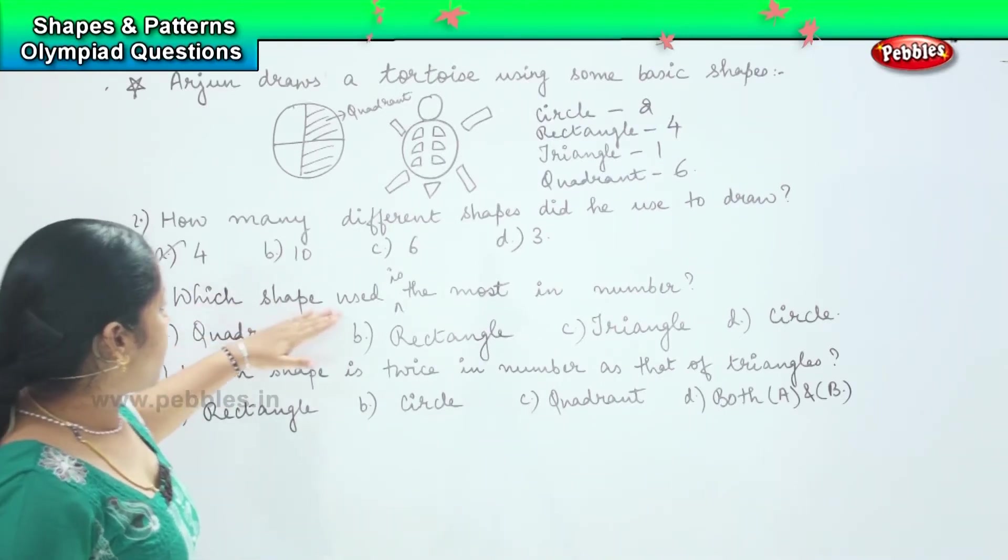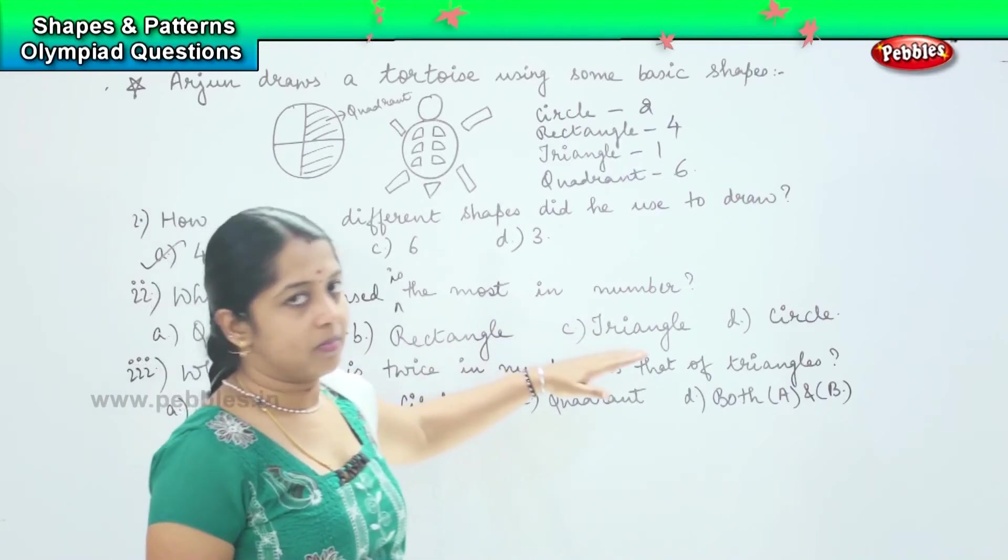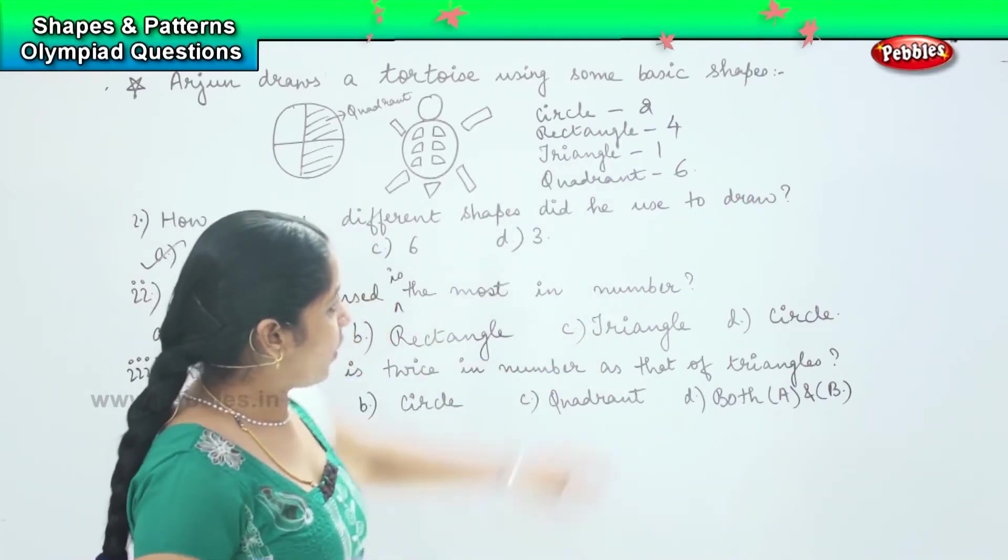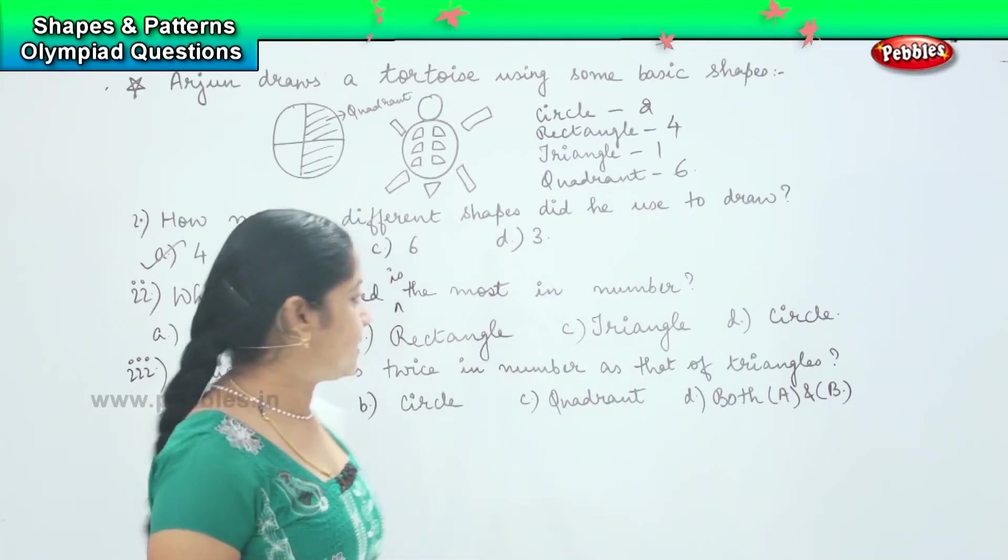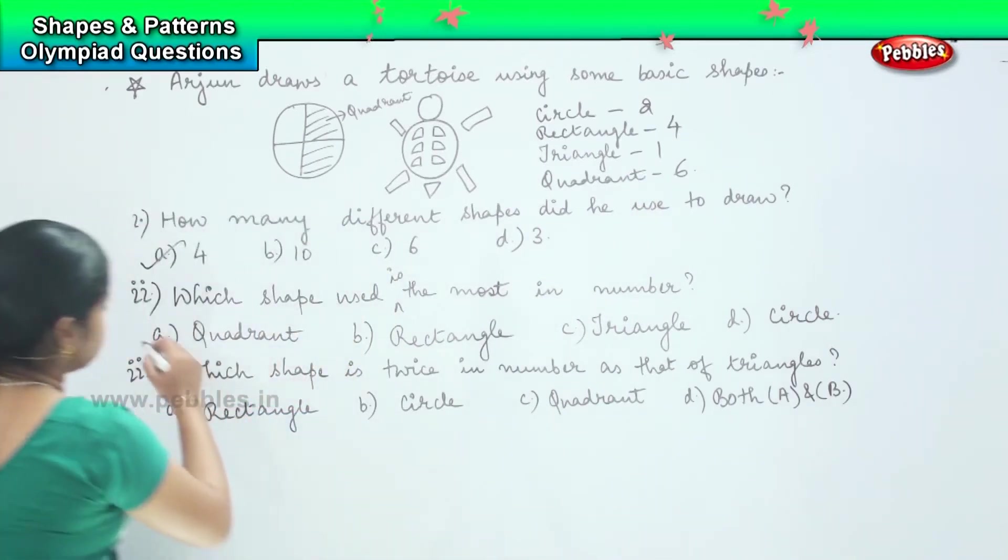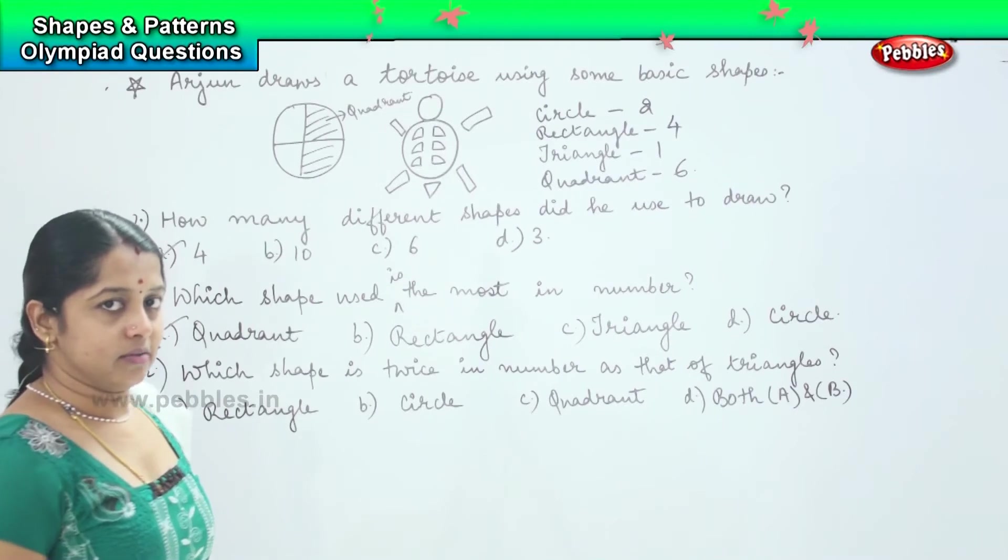Next one, which shape used is the most in number? So we will see the data here. Very good. It is the quadrant which is 6. So option A, quadrant, is the right answer.